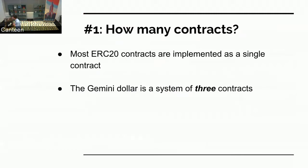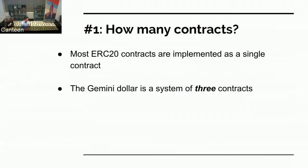Number one, most ERC-20 contracts you see are just one big contract — they've got the interface implemented. Total supply, you call one contract, that contract has the code to return the total supply. That same contract has all the balances, all the approvals, everything. The Gemini dollar, meanwhile, is three contracts. I'll get into why that is soon.